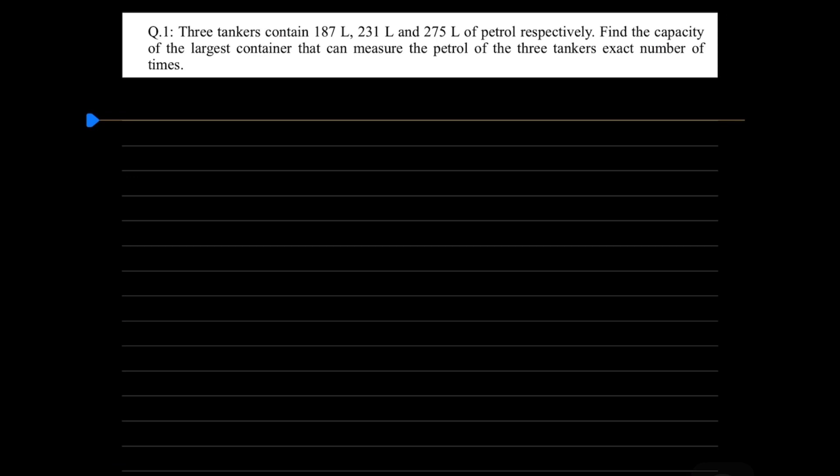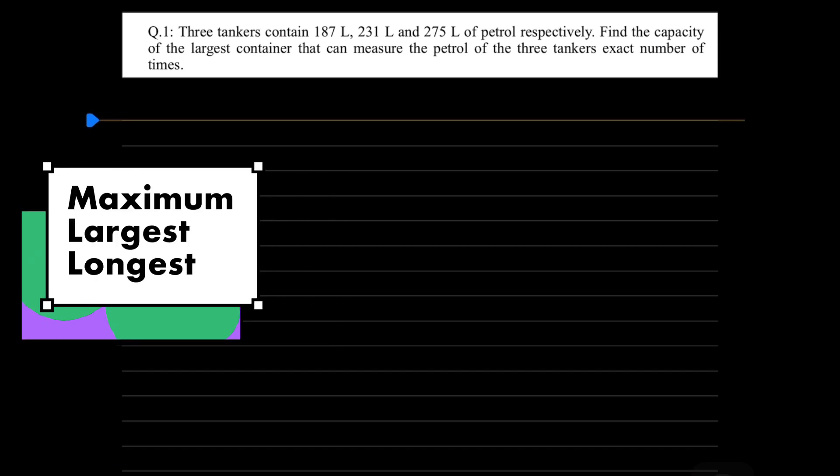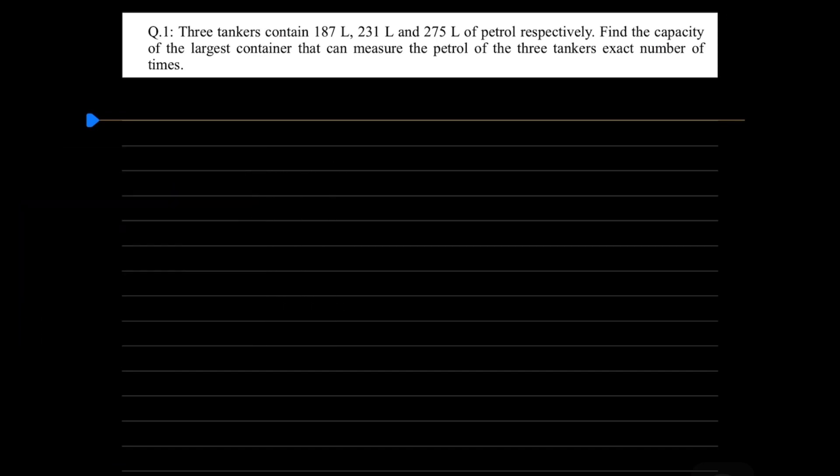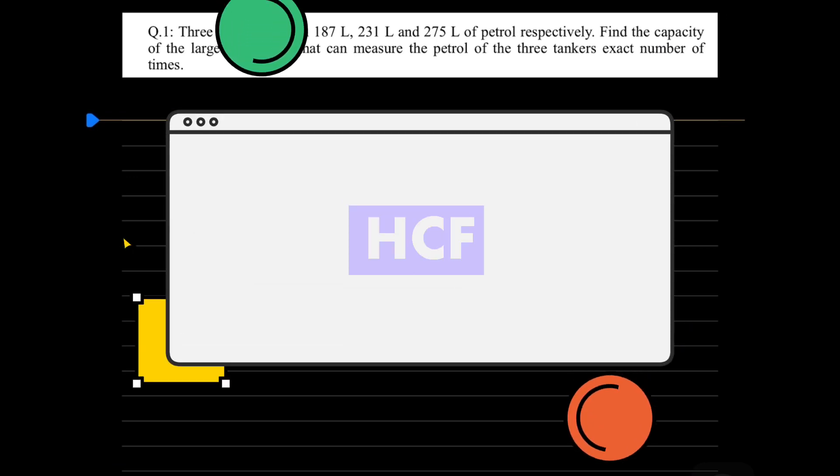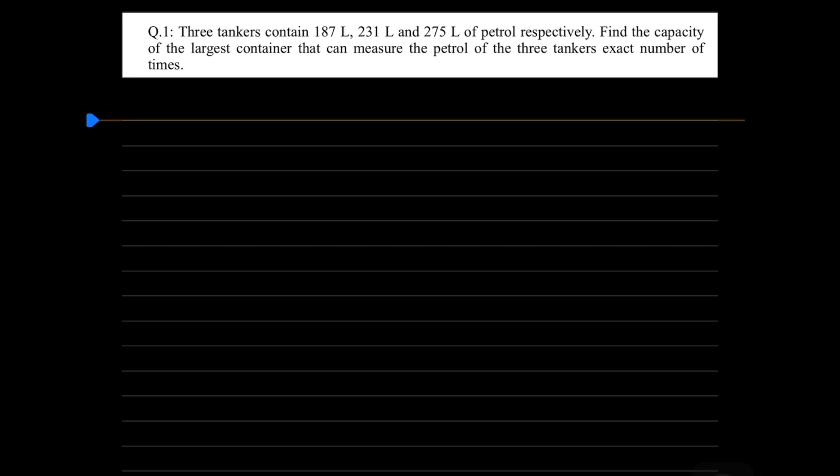That means you will need to focus on the language. First of all, I have told you in the class that if you have the maximum, largest, longest, or most, then most probably, not always, but most probably, you will need to calculate HCF. The second thing is that you need a container that can measure the exact number of times. That means you need a highest number that can divide all three exactly, and the number of times is HCF.